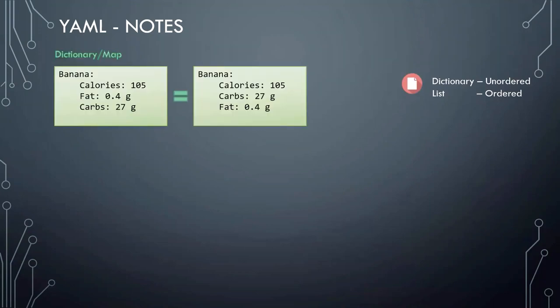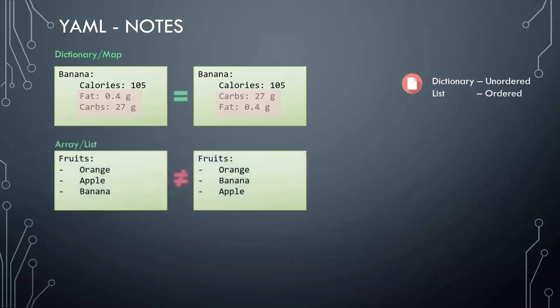What does that mean? The two dictionaries shown here have the same properties for banana. However, the order of properties fat and carbs do not match — in the first dictionary fat is defined before carbs, and in the second dictionary carbs comes first. But that doesn't really matter. The properties can be defined in any order and the two dictionaries will still be the same as long as the values match. This is not the same for lists or arrays. Arrays are ordered collections, so the order of items matters. The two lists shown are not the same because apple and banana are at different positions.